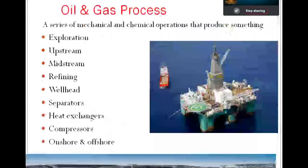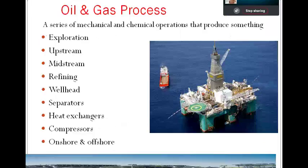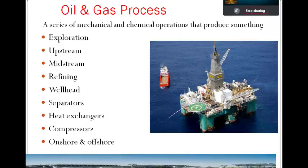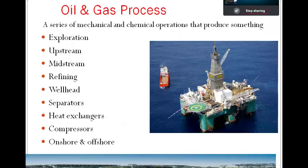Now starting from oil and gas process: we will discuss exploration, which is a series of surveys including processing, prospecting, systematic, and drilling activities that take place before the development of a field is decided. Then upstream operations — upstreams refer to all facilities for production and stabilization of oil and gas, including wellhead control, completion, and reservoirs. Exploration and upstream production together are referred to as E&P — exploration and production.